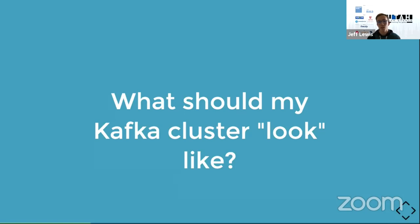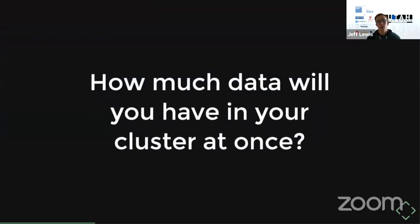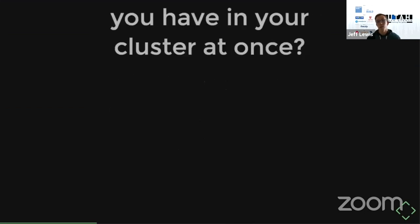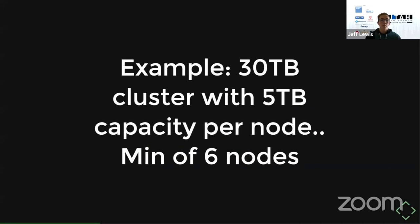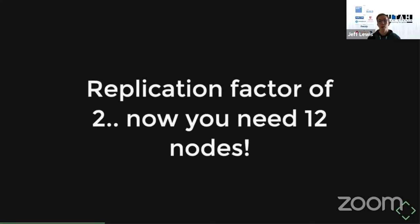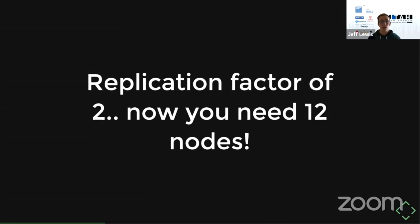When thinking about a Kafka cluster, it's most helpful to think about how much data you're going to have at any one time. For example, if you need to store 30 terabytes with five terabyte capacity per node, you'd need a minimum of six nodes — but that's assuming a replication factor of one. As soon as you bump replication factor to two, you'd need 12 nodes.